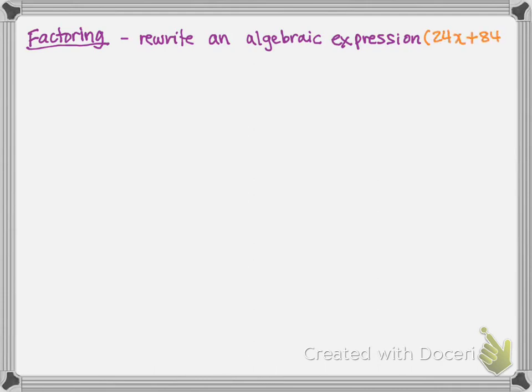Let's talk about factoring now. What is factoring? Here's the definition of factoring. You're going to rewrite an algebraic expression. Remember when we say algebraic, it has a variable as part of it. Expression means there are operations involved. For example, an algebraic expression would be like 24x plus 84. That was the answer we just got to the last example.